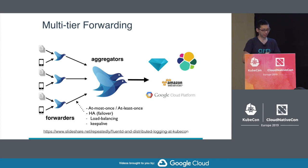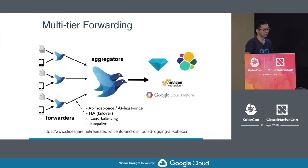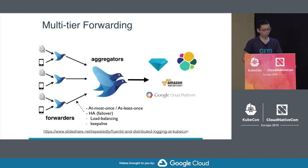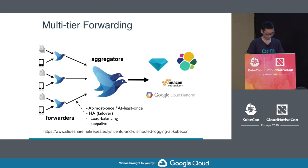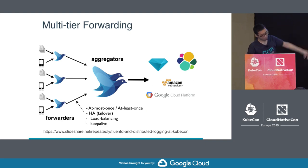Fluentd also supports complex multi-tier data forwarding. Fluentd has its own forwarding protocol with two delivery semantics: at-most-once and at-least-once. Fluentd supports HA and load balancing across multiple Fluentd aggregators, so you can process more traffic with this multi-tier model. If you're interested in this model's pros and cons, please check my slides from the previous KubeCon. Many large companies use this multi-tier model with 1,000 forwarders and 10 to 100 aggregators.